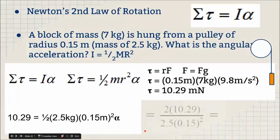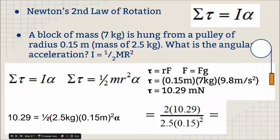And so then times the radius squared. We're going to do the algebra on that. I'm going to take the 10.29, multiply both sides by 2, and then divide by 2.5 and divide by 0.15 squared. You can do that calculation and see what you get. That comes out to about 366 radians per second squared. So that works out pretty well.